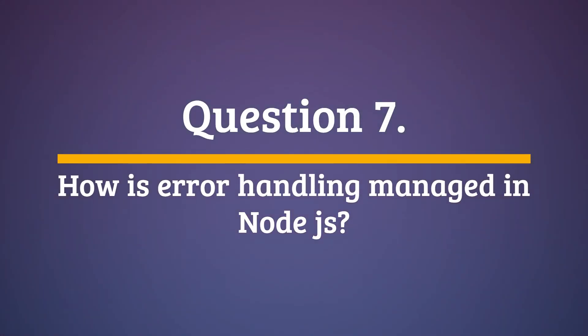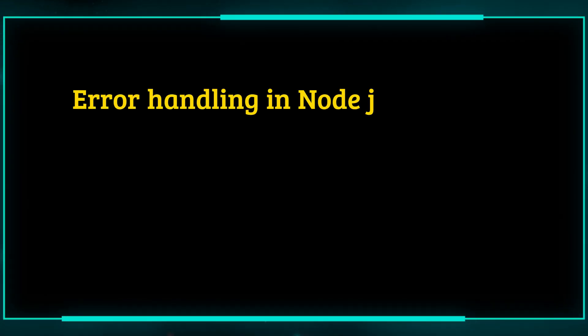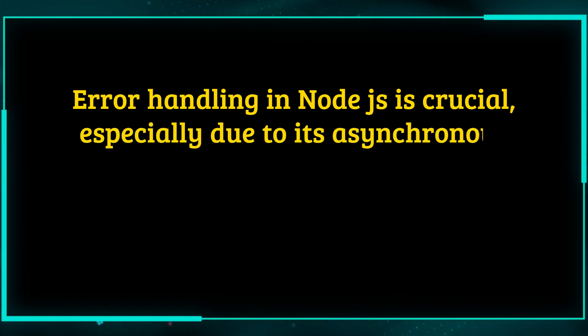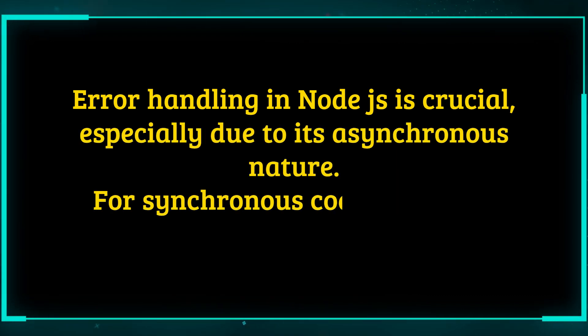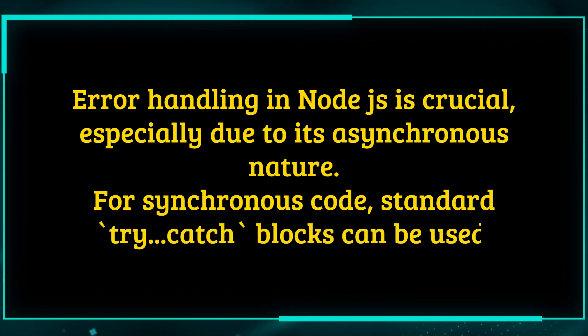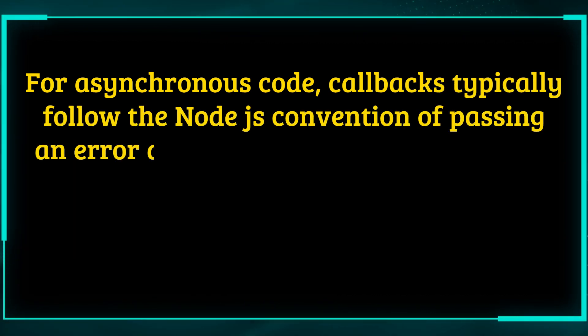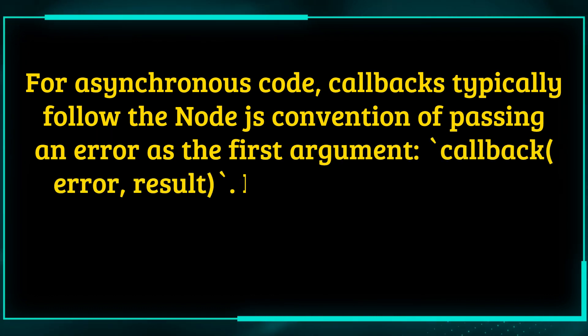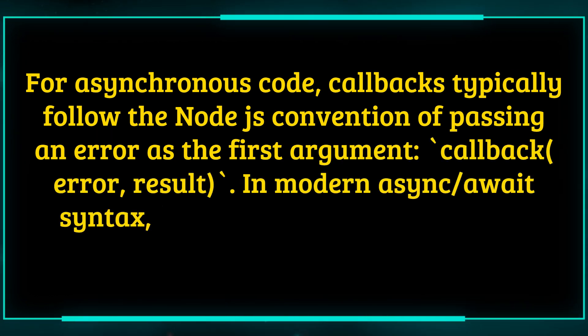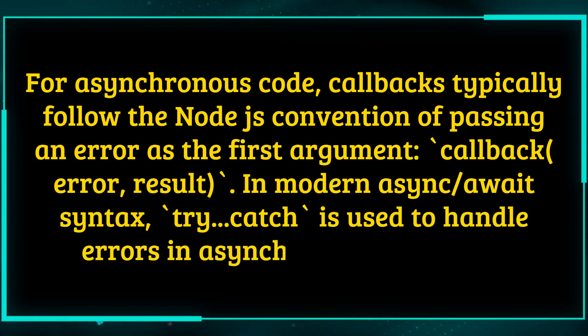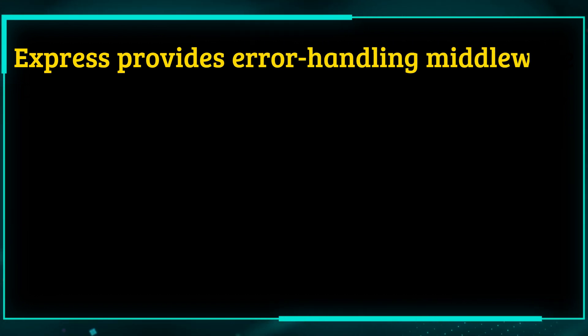Question 7. How is error handling managed in Node.js? Answer. Error handling in Node.js is crucial, especially due to its asynchronous nature. For synchronous code, standard try-catch blocks can be used. For asynchronous code, callbacks typically follow the Node.js convention of passing an error as the first argument — callback(error, result). In modern async-await syntax, try-catch is used to handle errors in asynchronous functions.